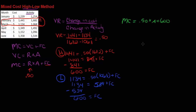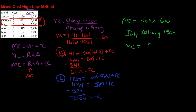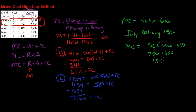Let's think about this. Imagine that for July, my activity is 1500. If July's activity is going to be 1500, what would my mixed cost be? Mixed cost equals 50 cents times 1500 plus 600. Half of 1500 is 750, plus 600 is 1350. So my mixed cost for July would be 1350.